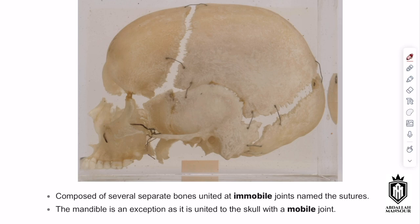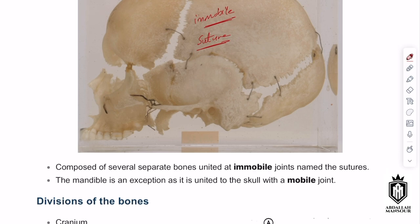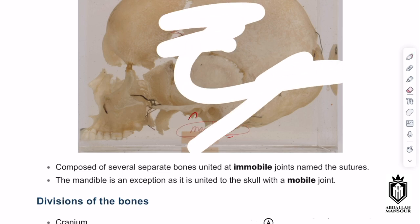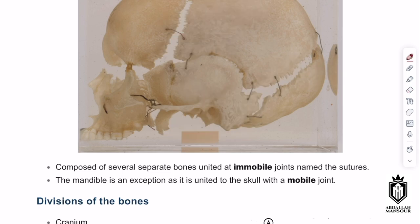These immobile joints are called suture lines. Multiple bones are connected by immobile suture lines, with only one exception — the mandibular joint, which is the only mobile joint. To identify a few bones on the lateral view of the skull, we can start identifying the key structures.